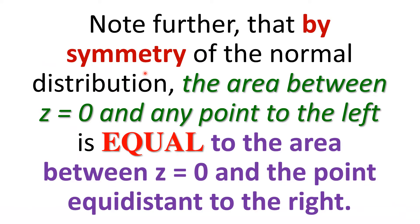An important reminder: by symmetry of the normal distribution, the area between z equals 0 and any point to the left is equal to the area between z equals 0 and the point equidistant to the right. From the center going right is the same as from the center going left, because of symmetry — one of the properties of the normal curve.